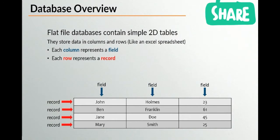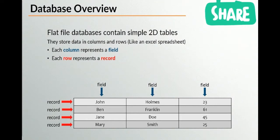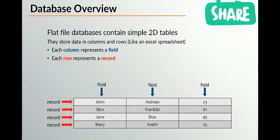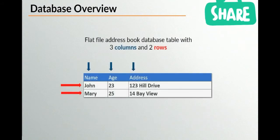We have a fixed number of fields for a given table — for example, first name, surname, and age — and then we can add as many records as we want. As web developers, you'll encounter people who use the words 'column' and 'field' synonymously, and the same applies to 'rows' and 'records.' For example, a table with three columns and two rows has three pieces of data per record: the name, age, and address for a given person going into the appropriate fields.